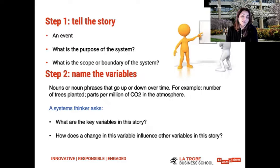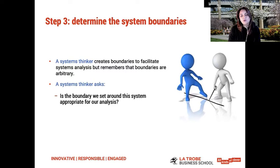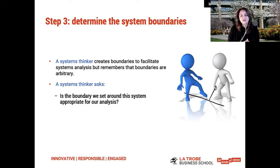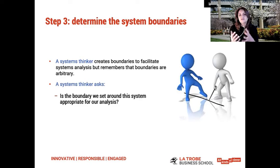A systems thinker would ask: what are the key variables in this story, and how does a change in this variable affect other variables in this story? For step three, it's important to determine the system boundaries. You really need to ask the question: is the boundary we set around the system appropriate for our analysis? If you are analyzing an issue around employee absenteeism, who are the stakeholders and what are the boundaries around which you frame that particular story? It's important that you're clear about who is included and what the scope of the particular system is.